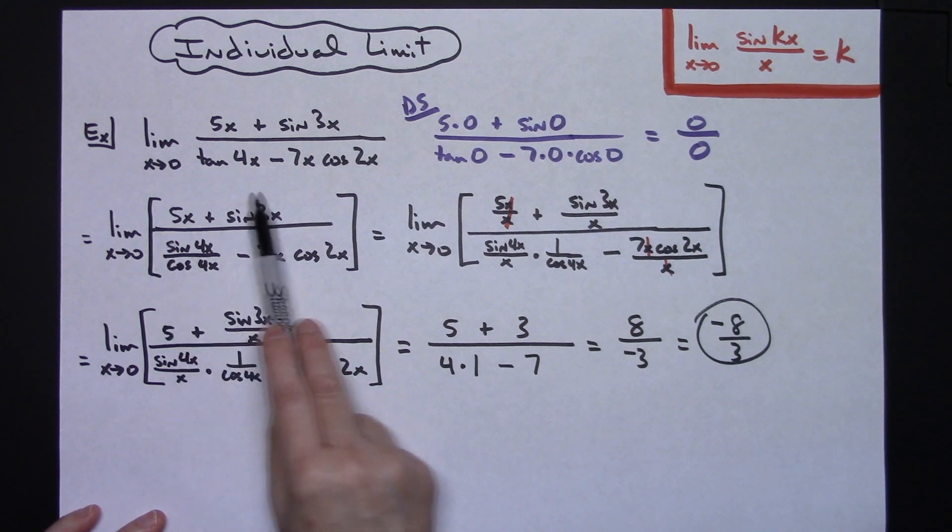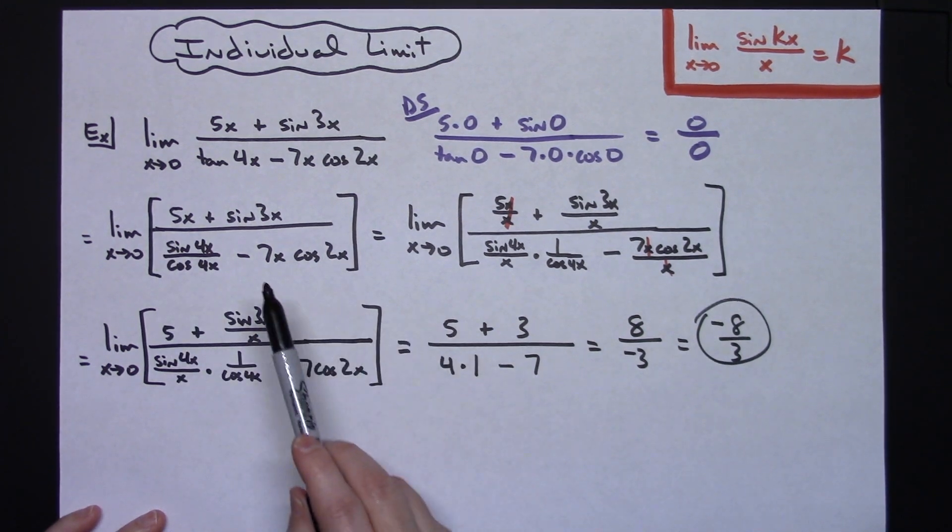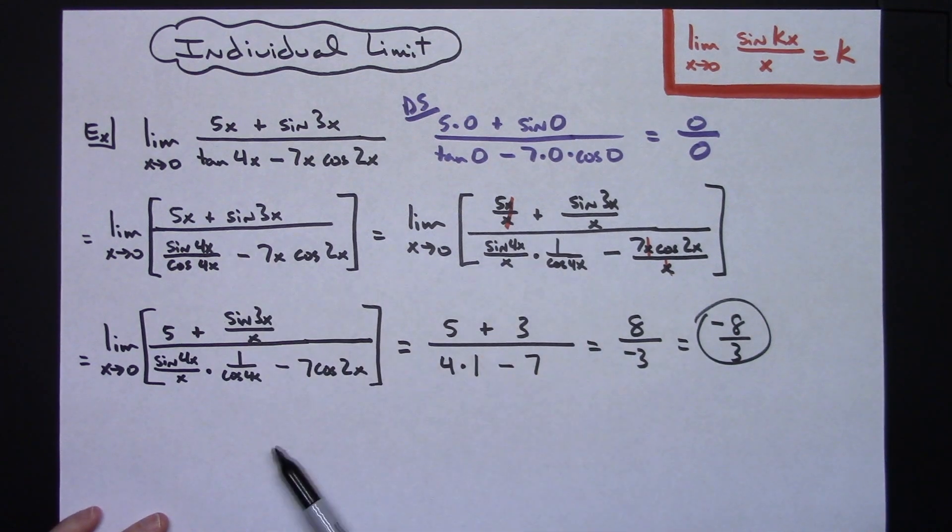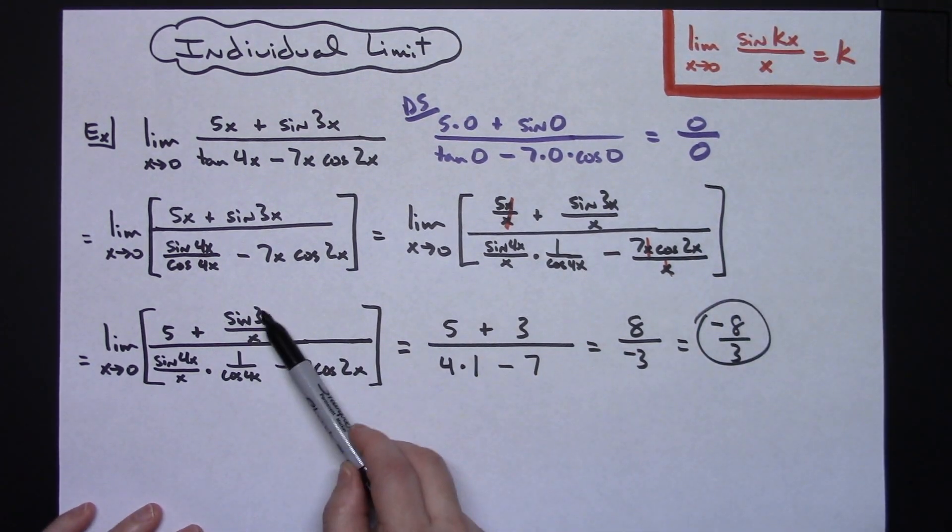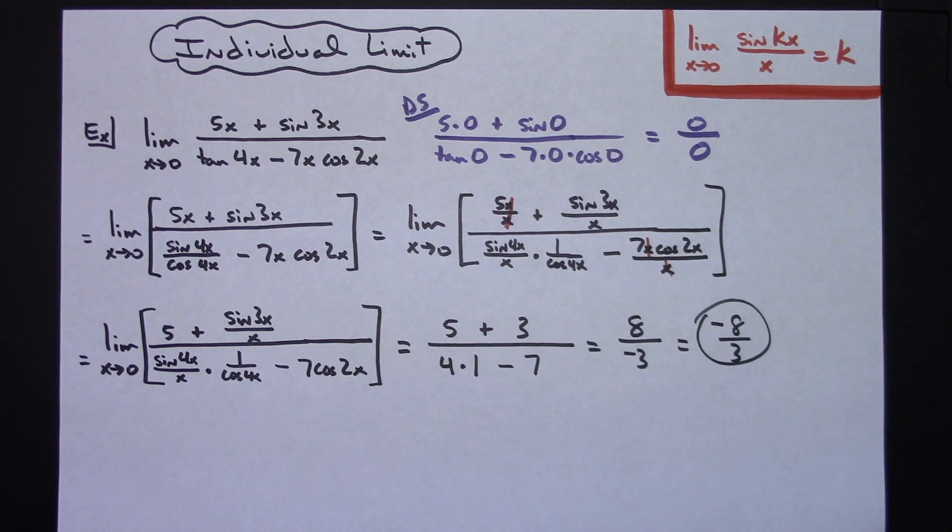But getting rid of that tangent and turning it into sine and cosine very very helpful. And then having this quotient here allows you to use that rule where you divide through by the highest power of x in the denominator. And then implementing this rule makes those two parts of the limit go really easily.